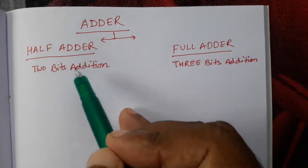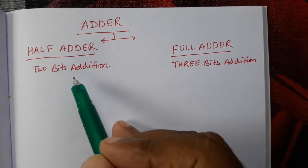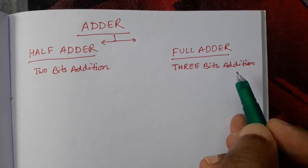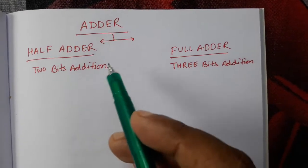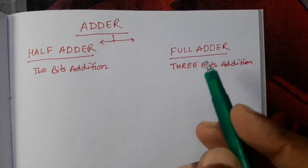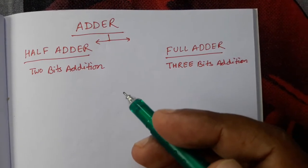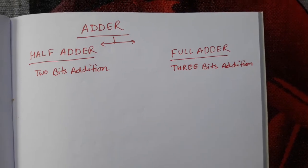First one is half adder where we will add 2 bits. This is called 2 bits addition. And full adder, 3 bits addition. So we will learn today half adder and full adder, how to construct these things and how we will create the logic circuit and truth table for this.